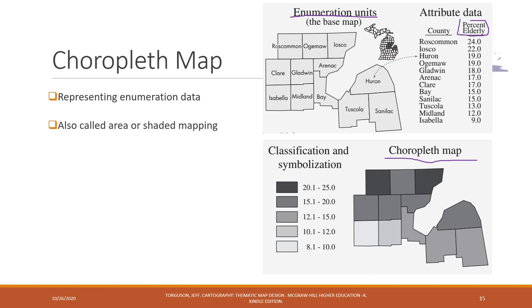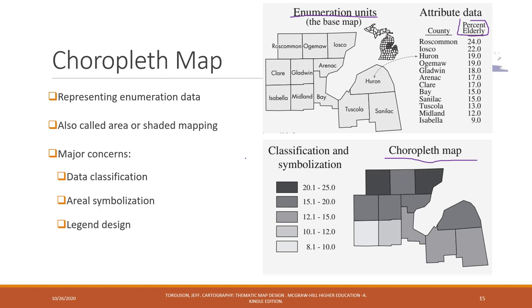The choropleth map is the most frequently used thematic map. However, there are several major concerns when you design the choropleth map. For example, data classification — we learned from previous lectures that there are four major types: natural break, equal intervals, standard deviations, and quantile. By choosing different types of data classification, even for the same data, the map will look different. You also need to think about how to design your legend and how to choose the appropriate colors. We will talk more about colors next week.